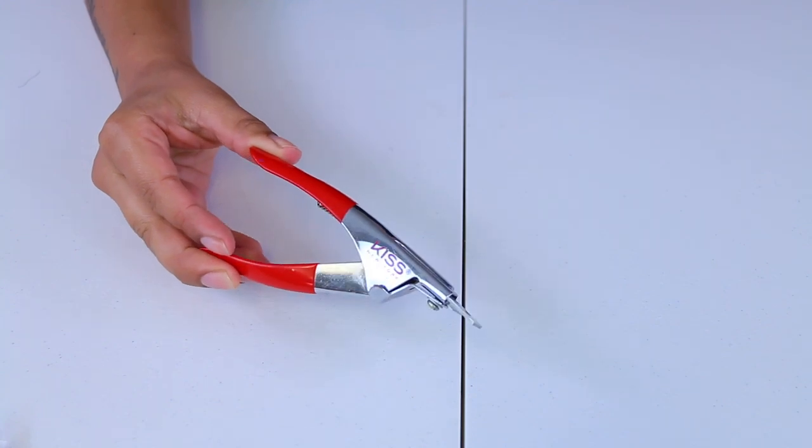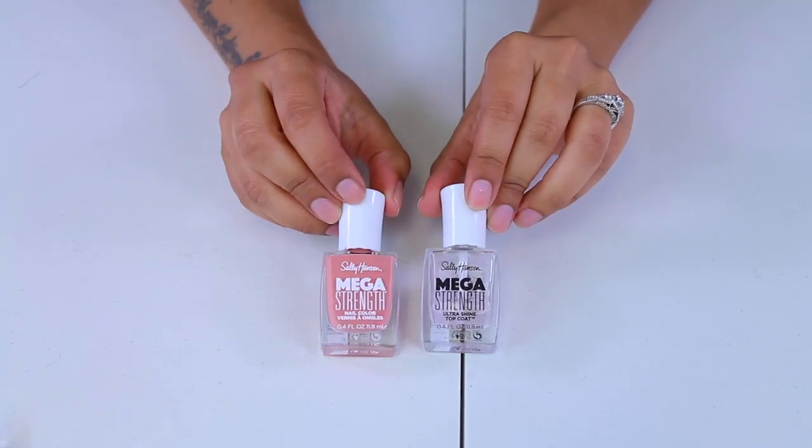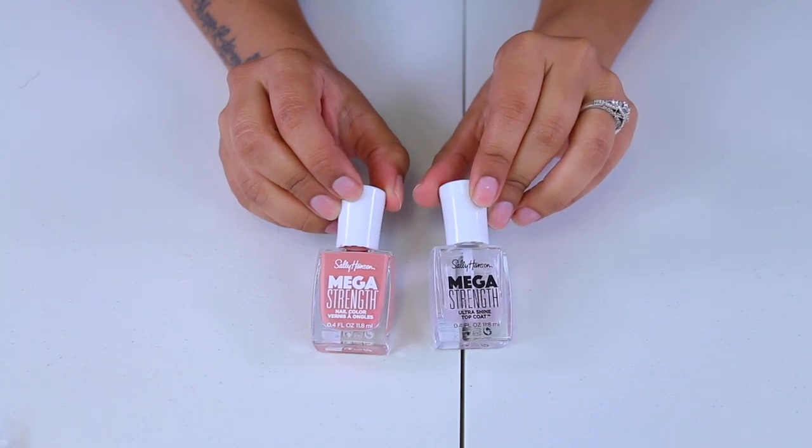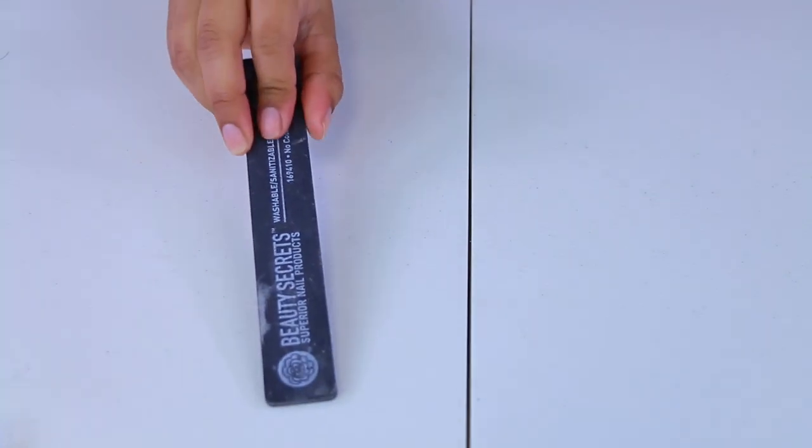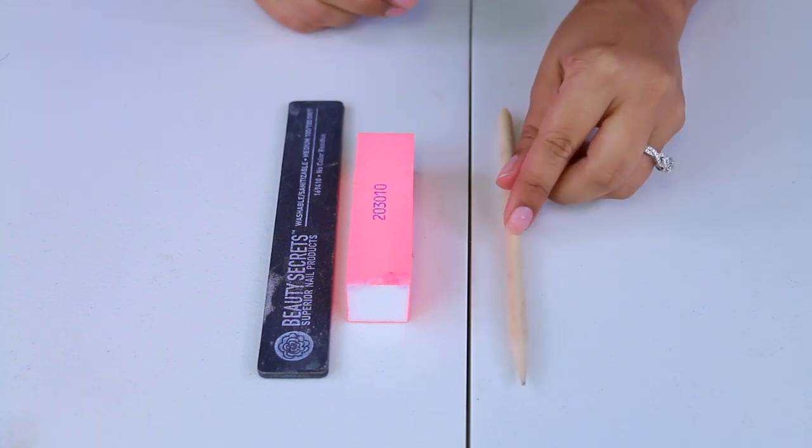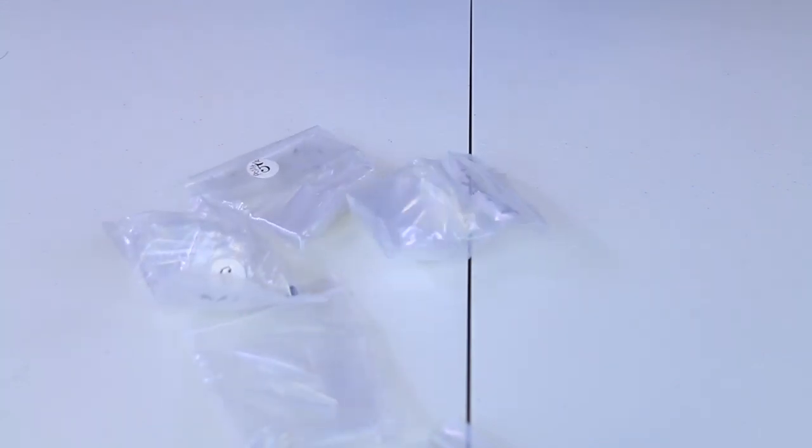You're also going to need a nail polish of your color. I have here the Sally Hansen Mega Strength and also a top coat, optional. And then of course you're going to need a nail file, some sort of a nail buffer, as well as a cuticle pusher. Everything that I buy I buy it from my local Sally's store, and of course you're going to need nails.